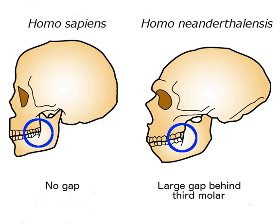The retromolar area of a human mandible is covered by the retromolar pad, an elevated triangular area of mucosa. It is composed of non-keratinized loose alveolar tissue covering glandular tissues and muscle fibers.